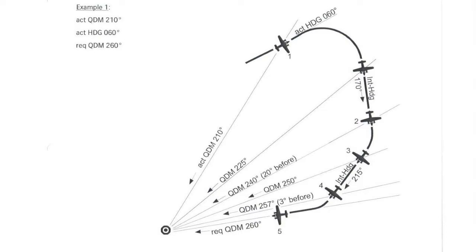I found this example of a QDM interception where the actual QDM is 210, the required QDM is 260, and the actual heading is 060 degrees. As the difference between the required and actual QDM is more than 30 but less than 70 degrees, the 90 followed by 45 degrees interception method is used.